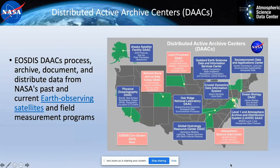I'm from the Atmospheric Science Data Center. There are 12 Distributed Active Archive Centers, or DAACs, that NASA has. The main purpose of these DAACs are to process, archive, document, and distribute NASA Earth Observing Satellite data, as well as field measurement ground campaigns and airborne campaign data from the Earth Observing System data and information systems. There are 12 DAACs, and each one is very science-focused, with ours being the Atmospheric Science focus area.